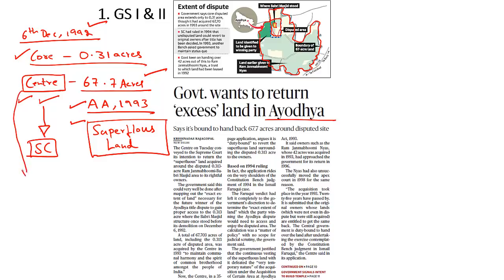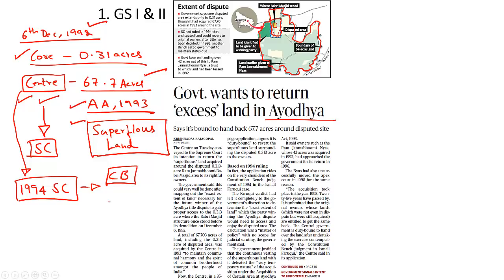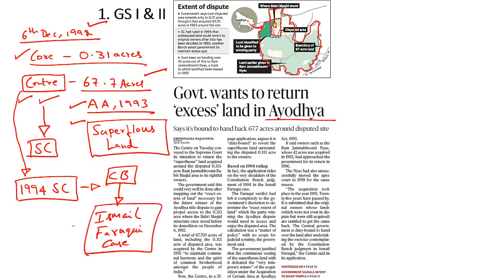This move by the central government is based on the 1994 Supreme Court judgment, wherein the constitution bench said the government has complete discretion in deciding the extent of land to be awarded to the winning party in the title dispute in order to give them access to the disputed site. This judgment came through the Ismail Faruqi case, granting the center discretionary powers over the land awarded to the winning party.